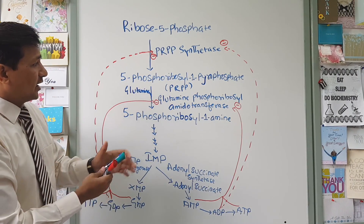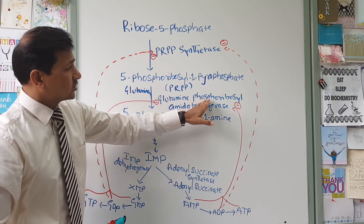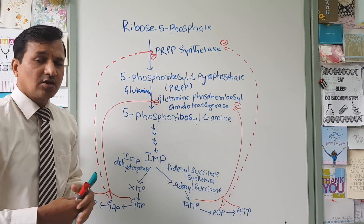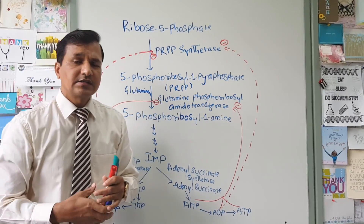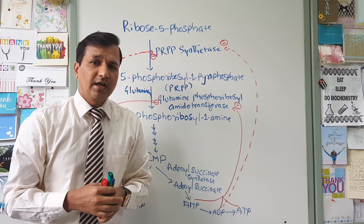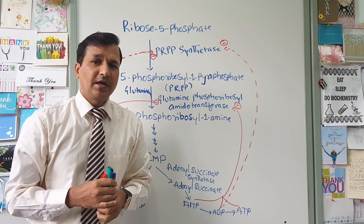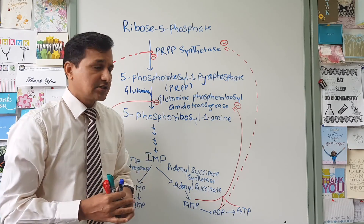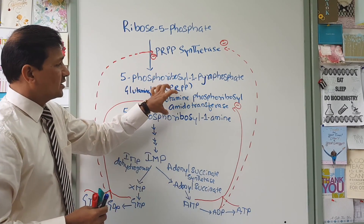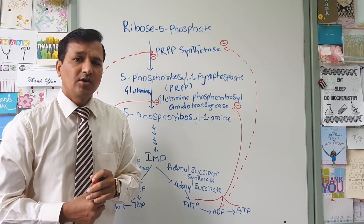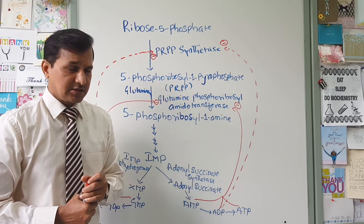That is why glutamine phosphoribosyl amidotransferase is referred to as the most regulated enzyme in purine nucleotide biosynthesis, and this reaction is the rate-limiting step in purine nucleotide biosynthesis.